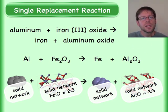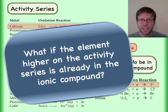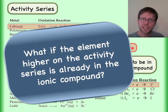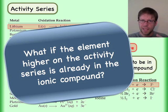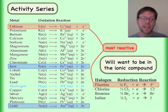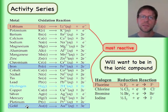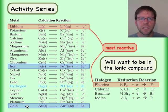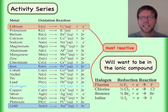What happens if you're put in a situation where the thing that is higher up on the activity series is already in the ionic compound? Let me show you what I mean: let's take iron and let's take gold. Gold is known to be very non-reactive, so I'm putting it in this reaction scenario.